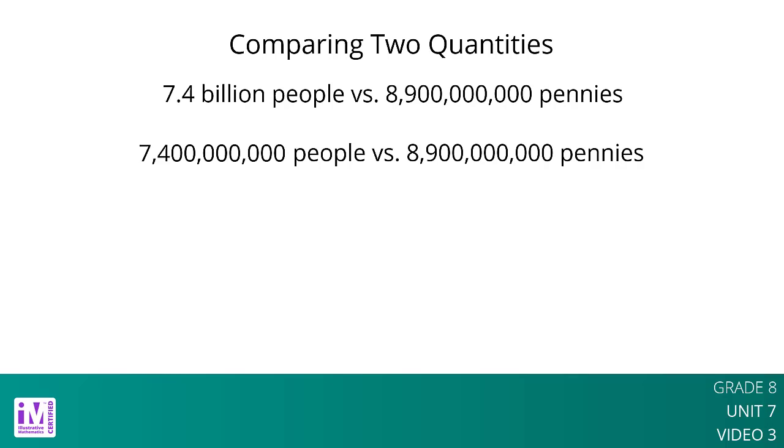Or we could use powers of 10 to write these numbers. 7.4 times 10 to the ninth power for people in the world, and 8.9 times 10 to the ninth power for the number of pennies.